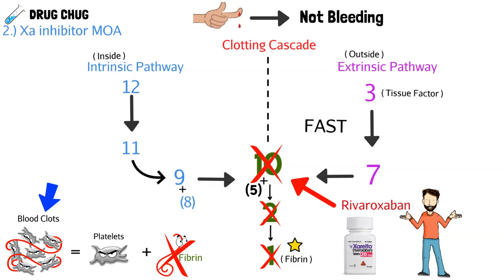One thing to note: all these Factor Xa inhibitors end in '-xaban.' The 'xa' is intentional — it stands for Factor 10a. So just remember: '-xaban' → Factor 10a → blocks the clotting cascade → thins the blood → anticoagulant.